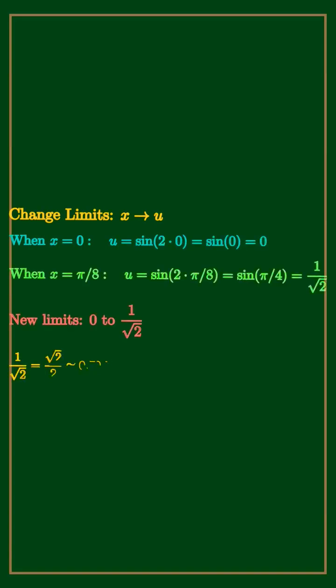Change the limits. When x is 0, u is sine of 0 equals 0. When x is pi over 8, u is sine of pi over 4 equals 1 over square root of 2.